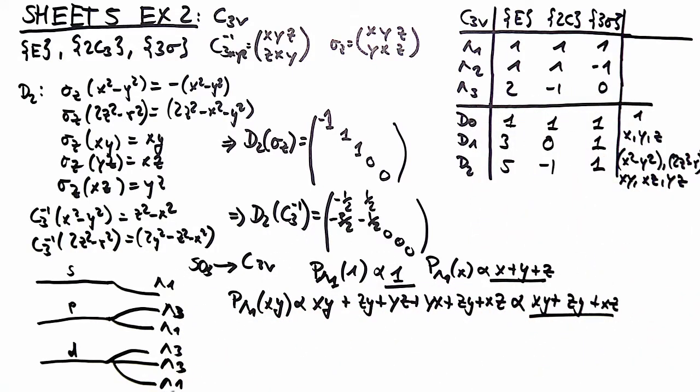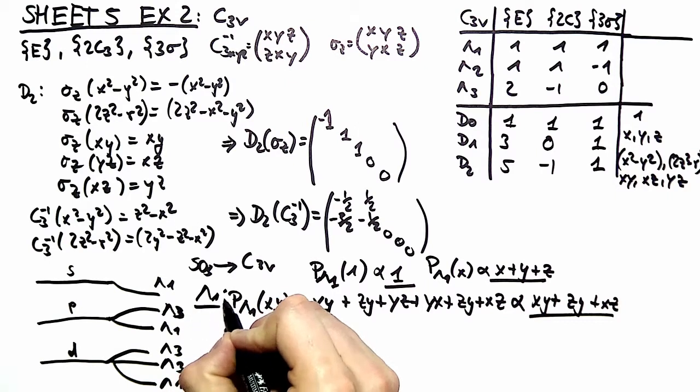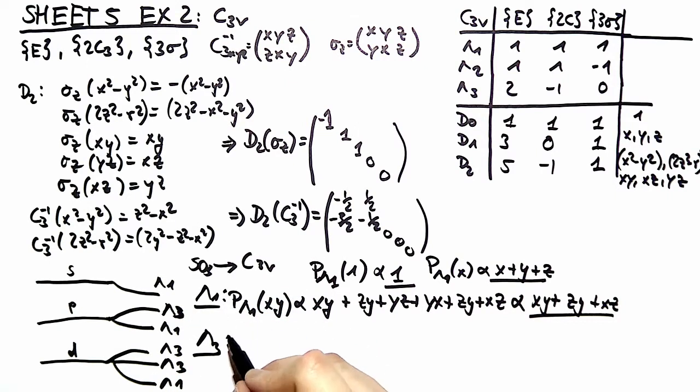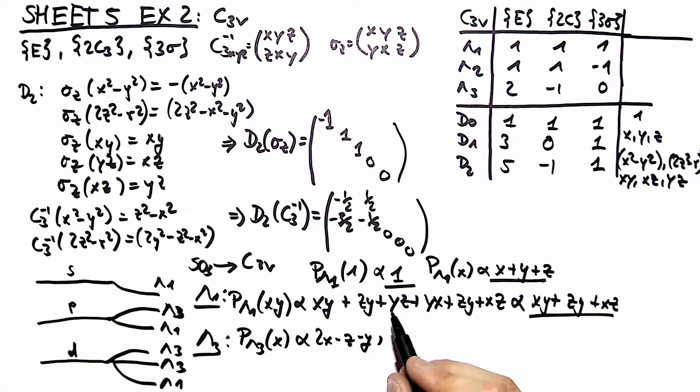We can do the same thing for lambda 3. For example we see how x projects into lambda 3. And we see that this arrives at 2x minus z minus y. And because of symmetry y and z transform very similarly. And we arrive at 2y minus x minus z and 2z minus x minus y, which live in the same irreducible representation.